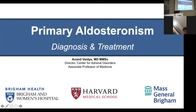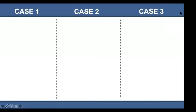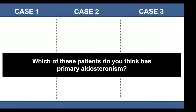Today's lecture is going to focus on primary aldosteronism. I'll give you a brief overview and then talk about diagnosis and treatment. I'm going to start by introducing you to three cases to set the stage. Think about which of these patients has primary aldosteronism, and based on what you think, we'll build on that throughout this talk.